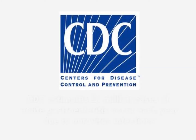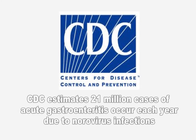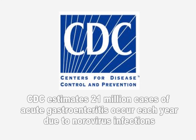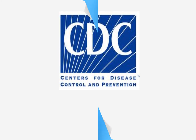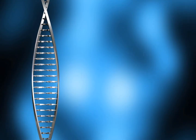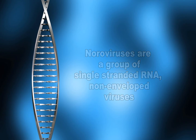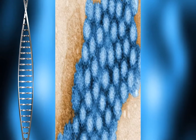In the United States, the CDC estimates that more than 21 million cases of acute gastroenteritis are due to norovirus infections each year. Noroviruses are a group of related, single-stranded RNA, non-enveloped viruses that cause acute gastroenteritis in humans.